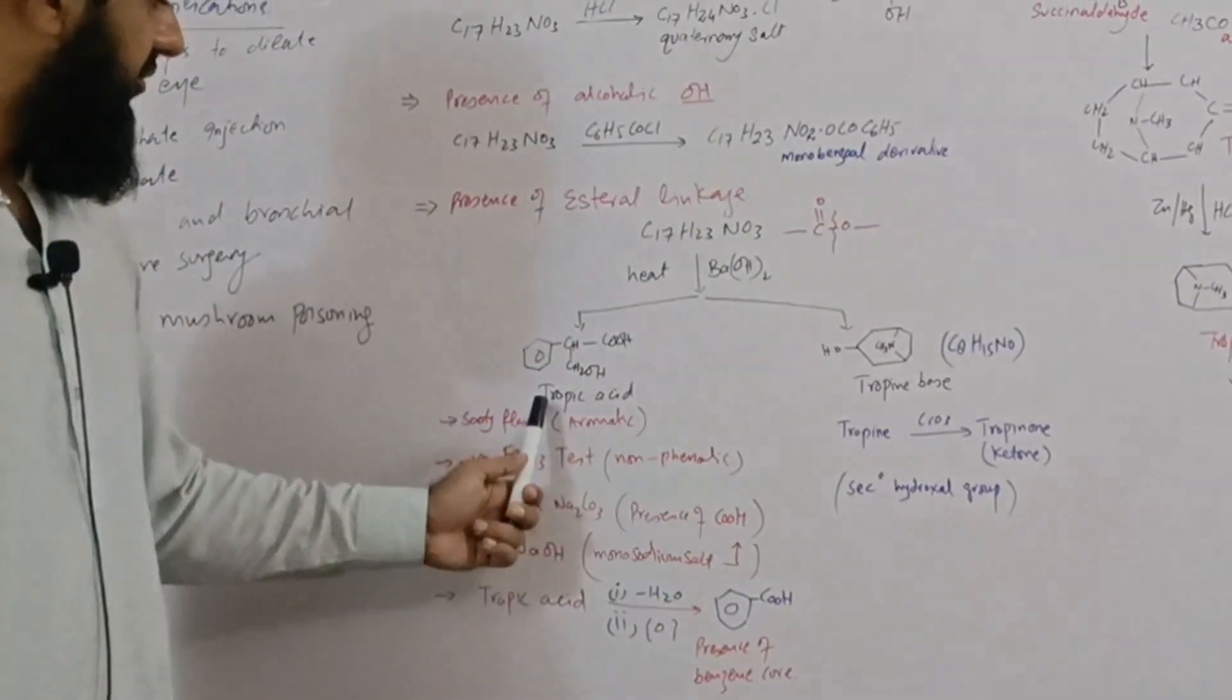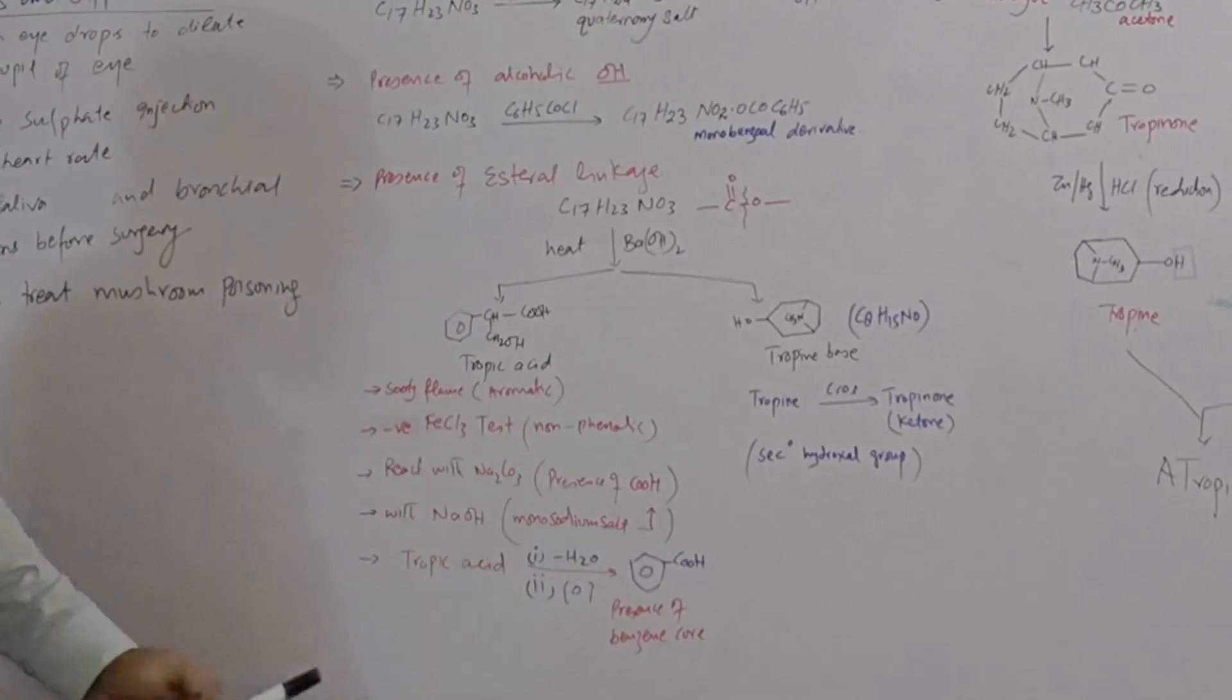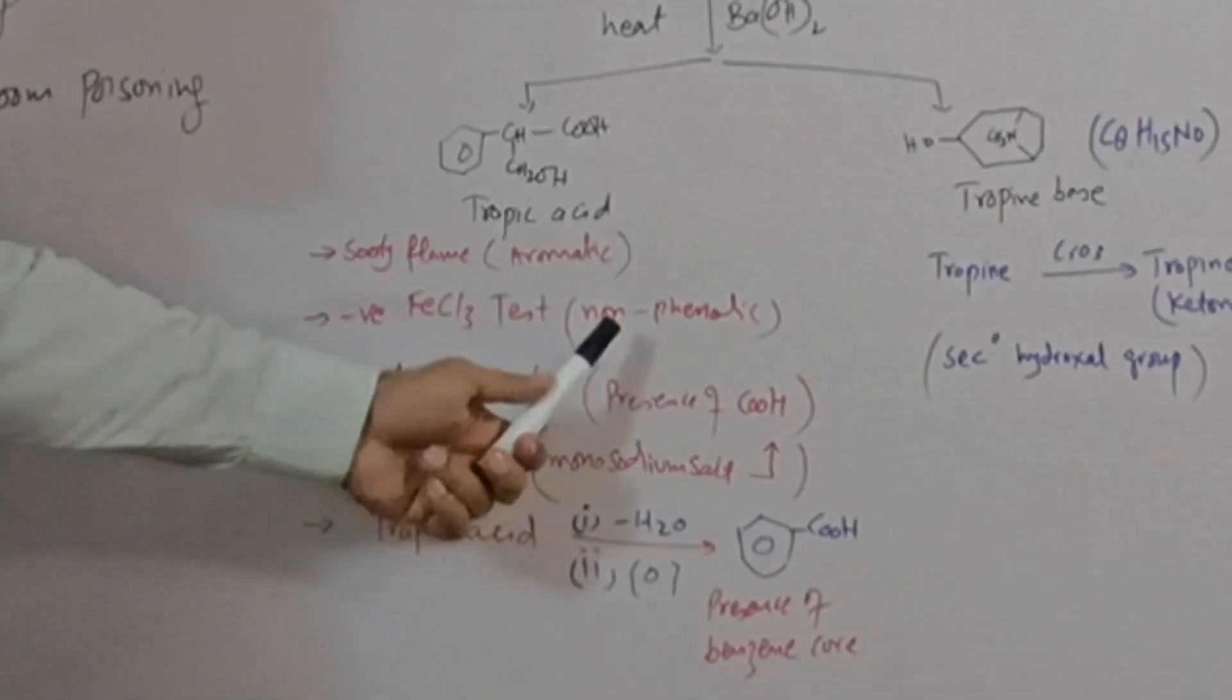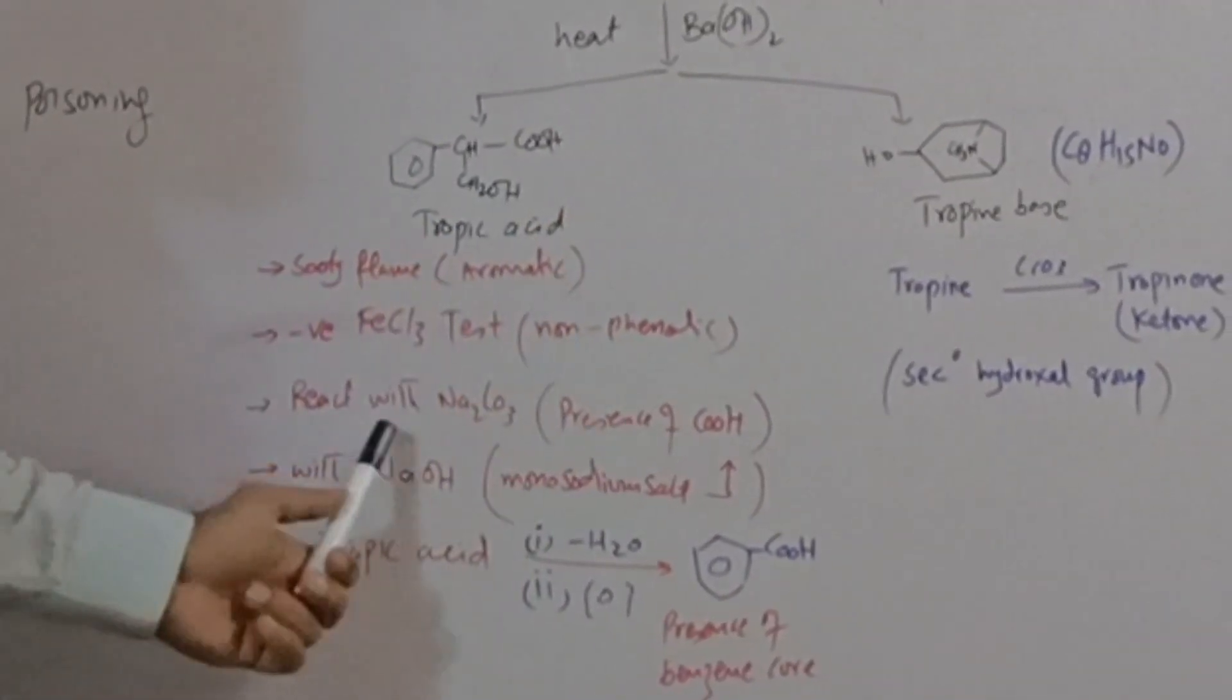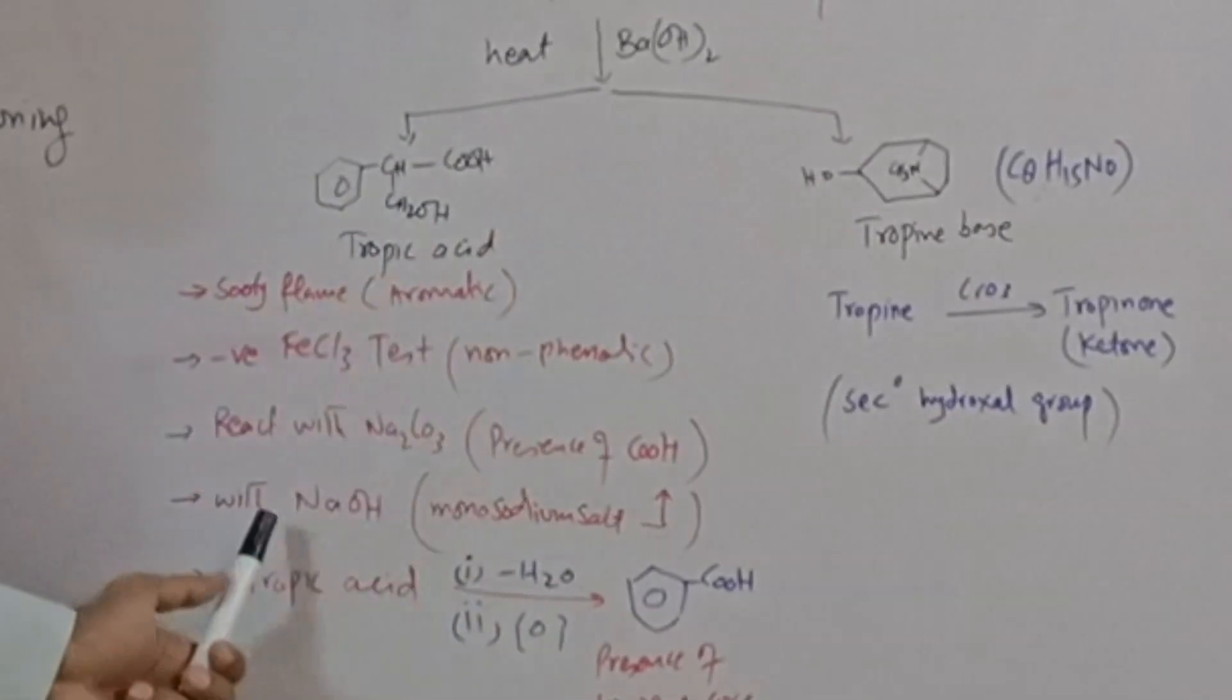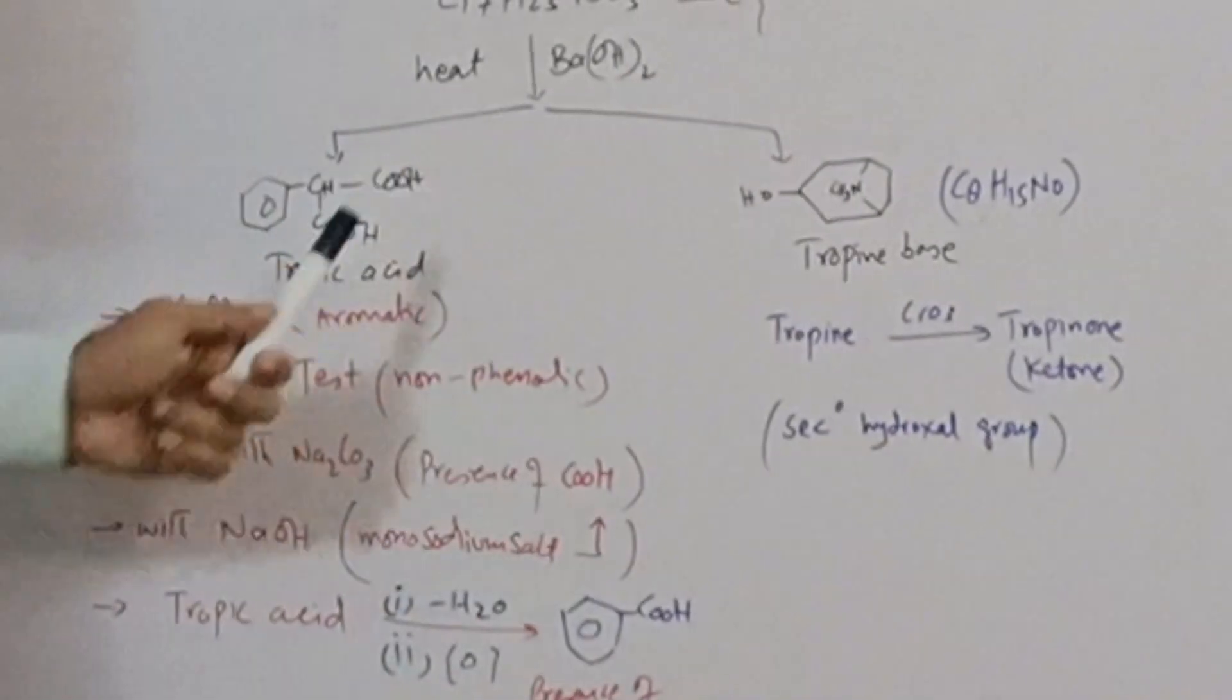Tropic acid gives sooty flame; it shows that aromatic ring is present in its structure. There is no phenolic group so it gives negative ferric chloride test. There is a carboxyl group so it reacts with carbonates and bicarbonates as well as with sodium hydroxide and monosodium salt is produced. It shows that carboxylic group is present.